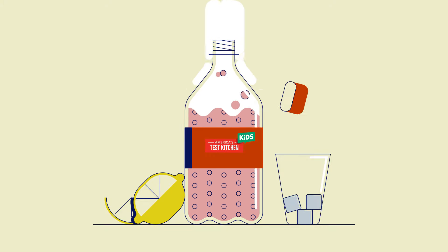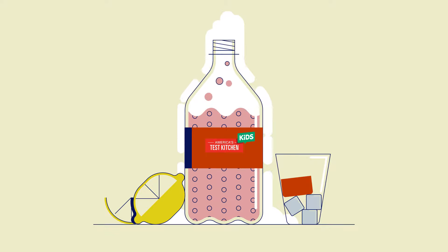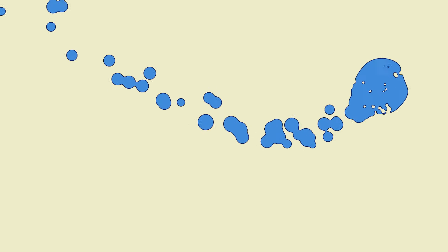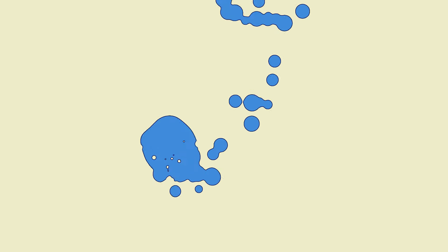Opening the bottle causes some of the dissolved carbon dioxide to turn back into bubbles. To get the bubbles really popping, the dissolved carbon dioxide needs a nucleation site.